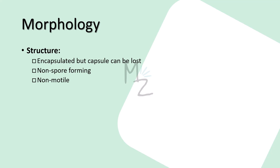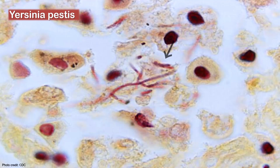Structure: Yersinia pestis is an encapsulated bacterium. Its capsule is composed of a polysaccharide-protein complex. The capsule can be lost, and loss of capsule is accompanied by loss of virulence. Yersinia pestis is not responsible for forming spores and is also non-motile. Under the microscope, it is rod-shaped and red colored because it's gram-negative, and we cannot see any motility apparatus like a flagellum because Yersinia pestis is non-motile.